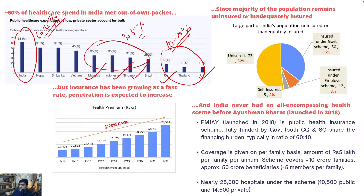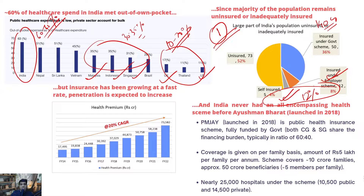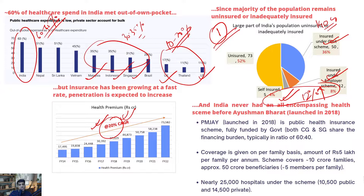There are two reasons for India's high out-of-pocket expenditure. First, India is a very underinsured country. Out of a 140 crore population, only around 12% have health insurance — either their own or employer-provided. Around 90% of the population has no insurance or only inadequate government coverage. Over time, insurance penetration has been improving; health premiums collected by insurance companies have been growing at around 20% over the last six to seven years, and this 12% coverage is expected to go up.